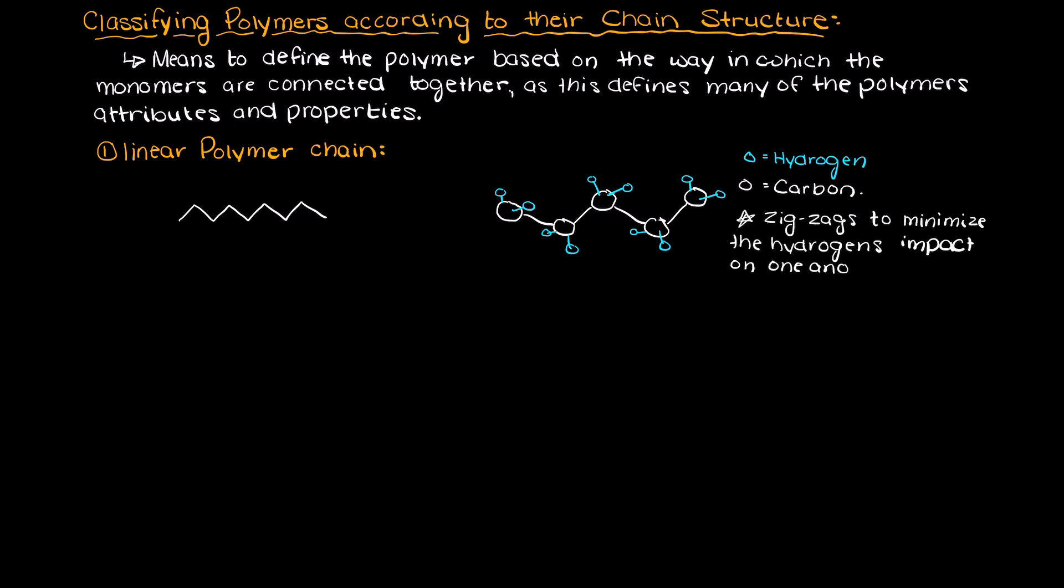This category of chain structures is almost exclusively thermoplastics as the linear chains can simply slide around one another when heated and reconfigure their structure to whatever mold or die they are placed in.